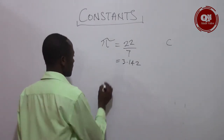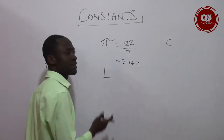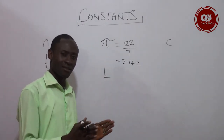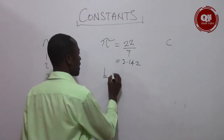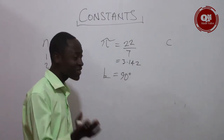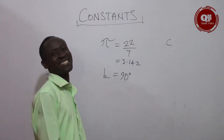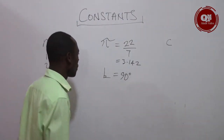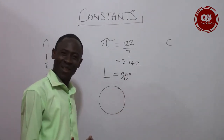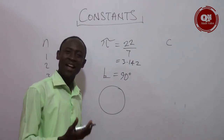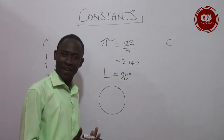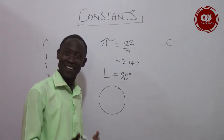Now look at this. We have a right angle, and this is how we write a right angle. A right angle is also a constant because whenever we talk of a right angle, we are referring to 90 degrees. So this is also a constant. What about a circle? The total angle of a circle is three hundred and sixty degrees, so three hundred and sixty degrees is also a constant.